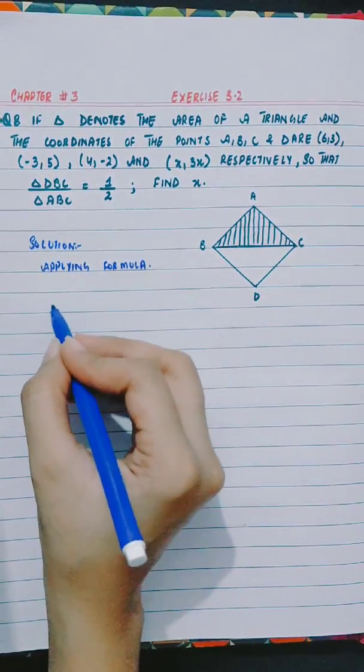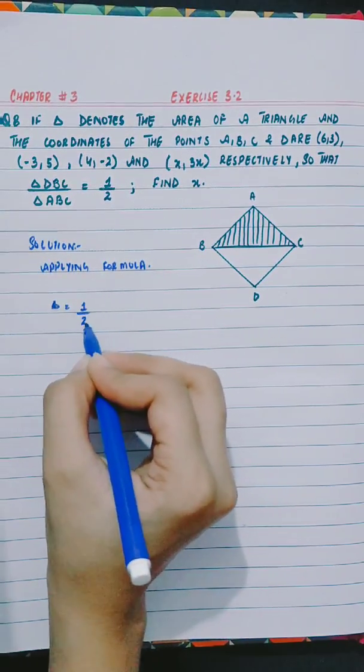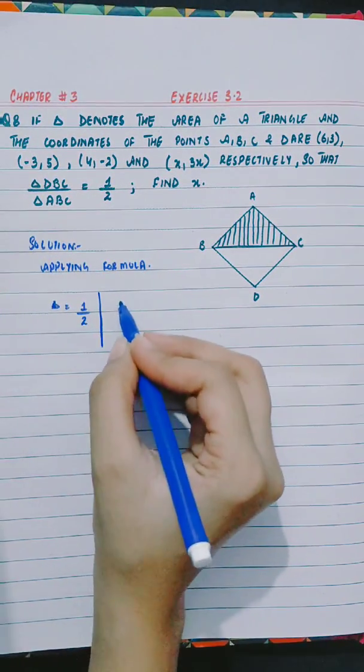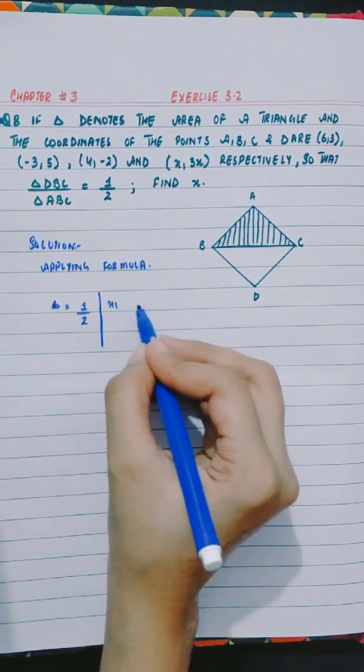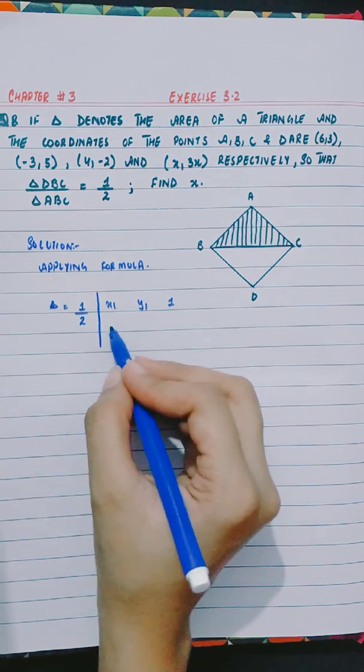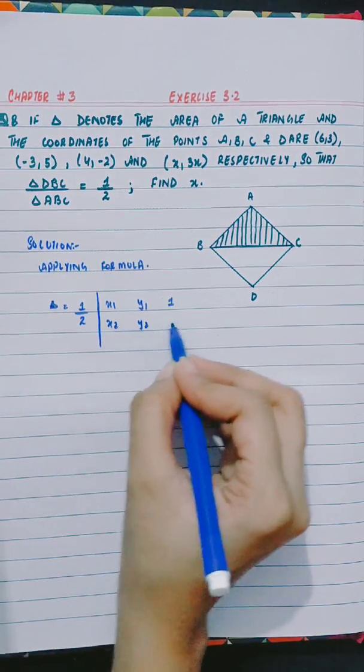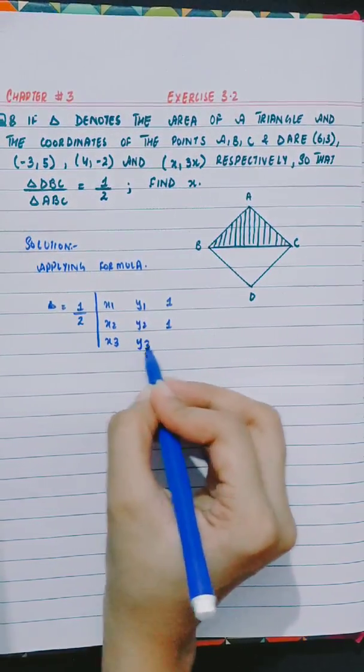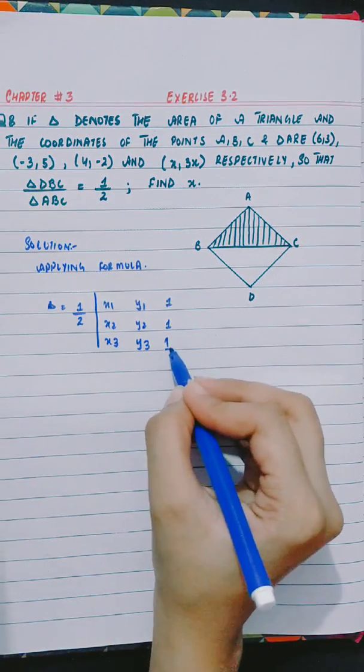Applying formula, area is equal to half of determinant of x1, y1, 1, x2, y2, 1, x3, y3, 1.